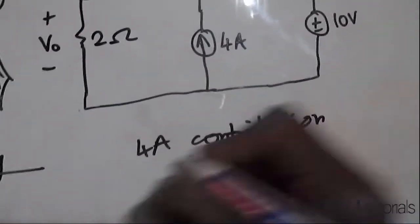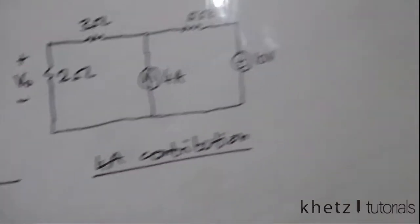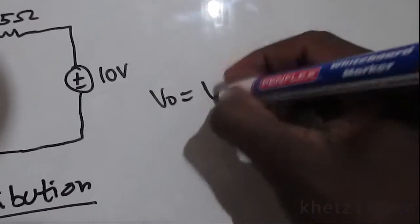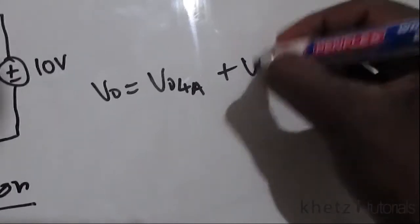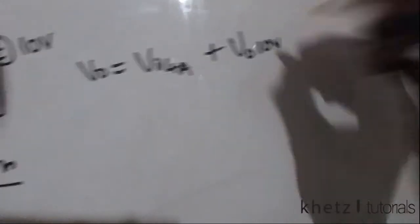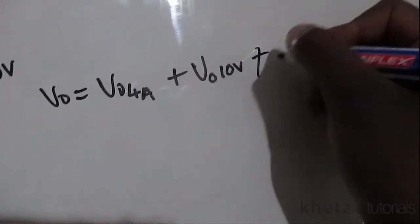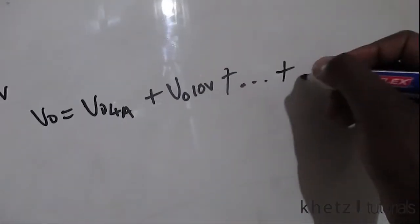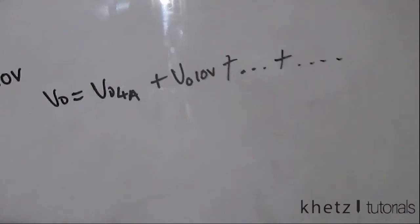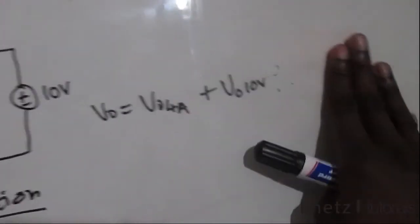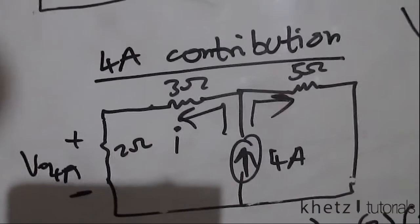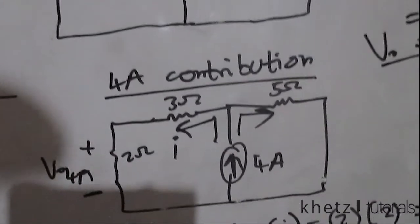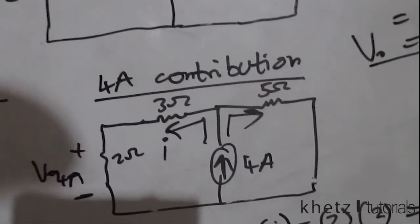Mathematically, superposition says Vo equals the contribution of the 4 amperes plus the contribution of the 10 volts — one term per independent source. In this case we only have two, so we only need to worry about these two. Finding the contribution of the 4 amperes, we simply perform a current division.